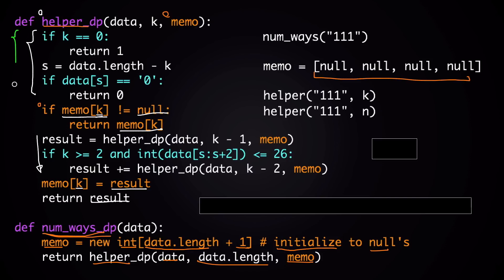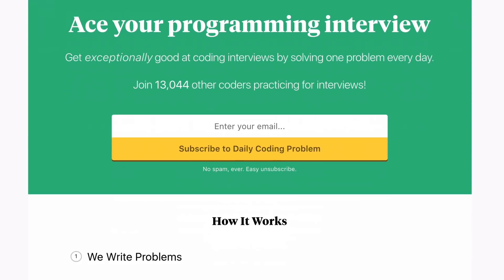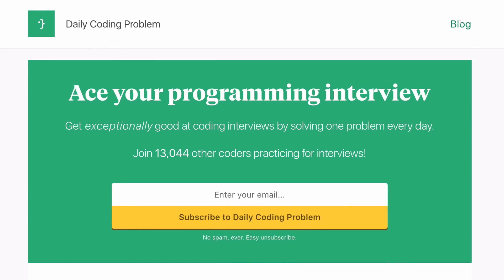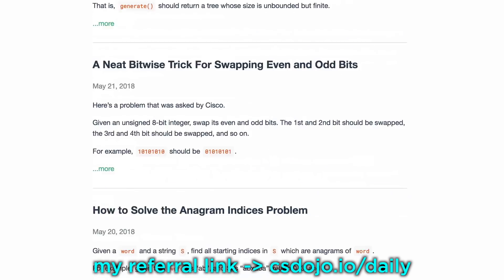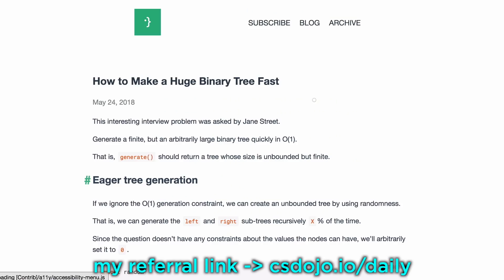With this solution it only takes O(n) time to find num_ways of the given string, instead of O(2^n) from before. By the way, this problem came from Daily Coding Problem — you can find it through my referral link csdojo.io/daily. It's a website that gives you a daily coding problem to practice with, run by a friend of mine I used to work with at Google. Using my referral link gives a 10% discount on their premium subscription. Anyway, thank you so much for watching and I'll see you in the next video.